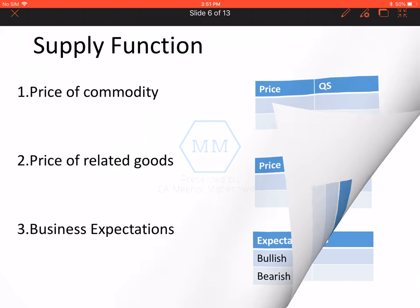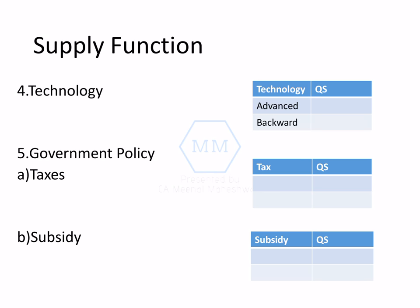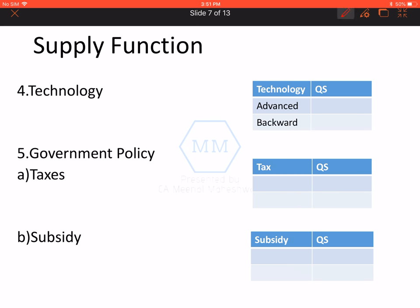Coming on to the next factor affecting supply — technology. Agar achi ya advanced, improved technology use karoge, tho quantity supplied badh jayega. Aur agar backward ya obsolete technology use karenge, tho supply kam ho jayega. Positive relation with technology.